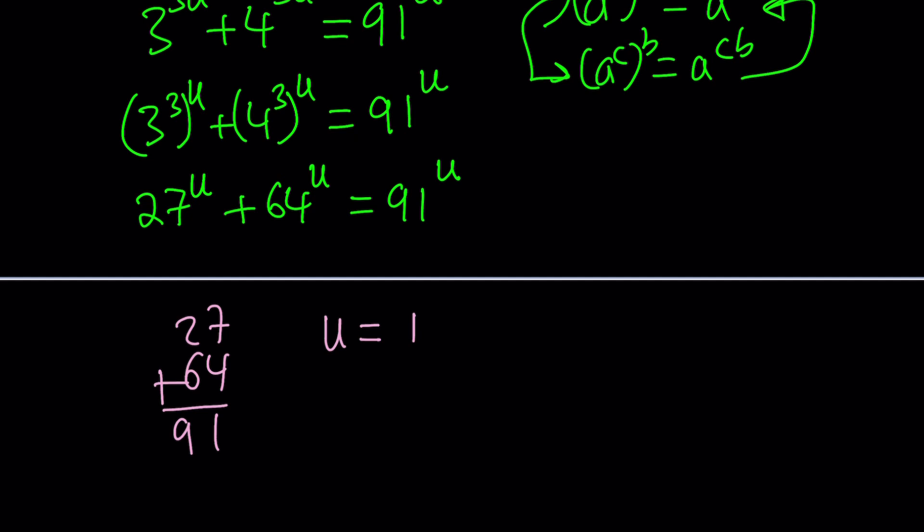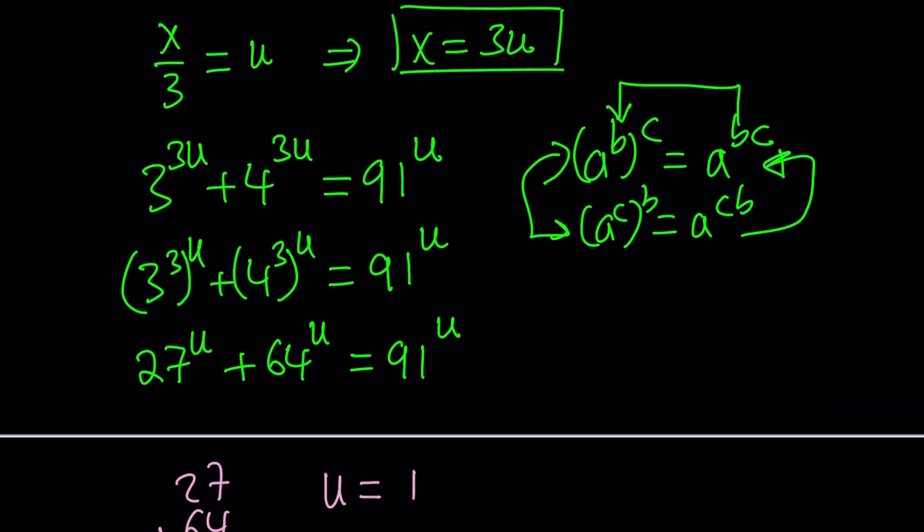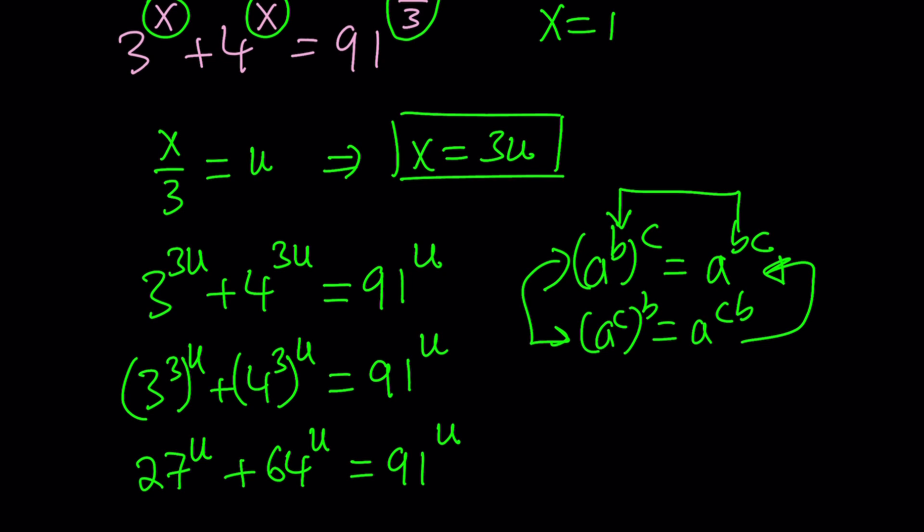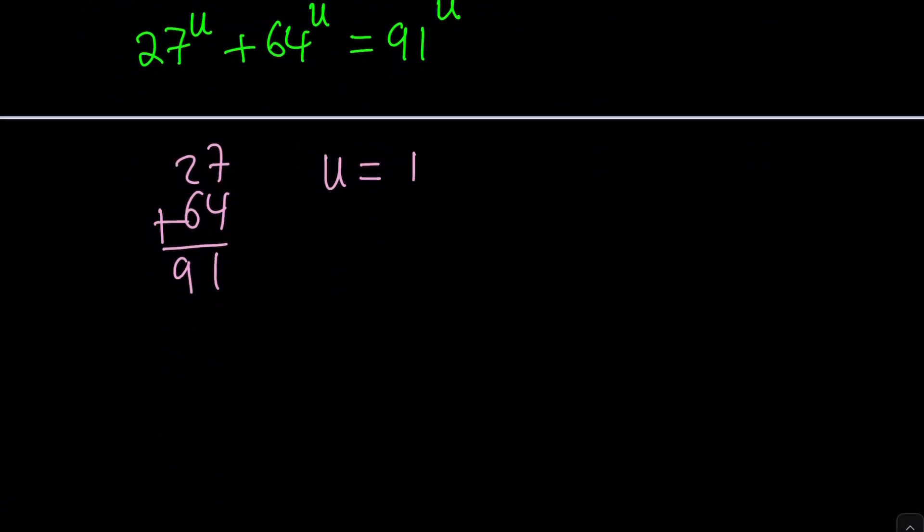If u is equal to 1, what is x? Well, what is u? So, u is x over 3 based on this. So, I can replace u with x over 3, and that gives me x over 3 equals 1, and that gives me x equals 3.